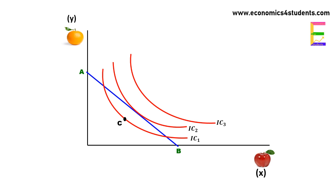Point C on indifference curve IC1 is not an optimal point, as it is below the budget line. That means the consumer's income is not fully spent at point C, and he can derive more utility by moving towards the budget line. Let us consider points P, Q, and E on the budget line — the cost of each of these bundles is equal to the consumer's income.